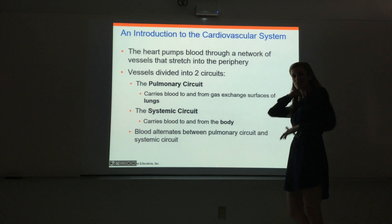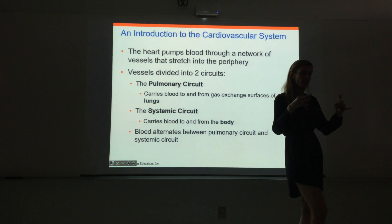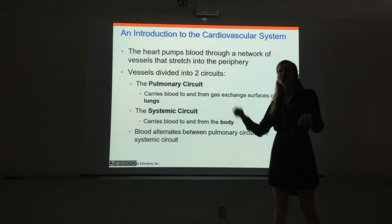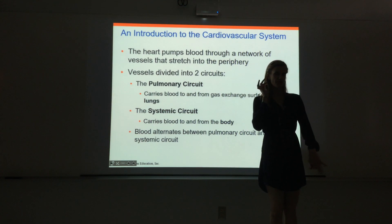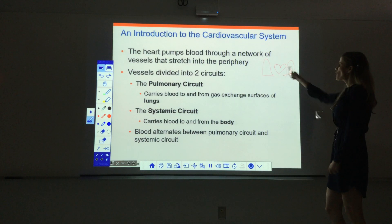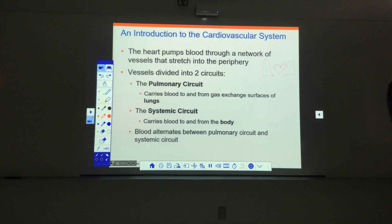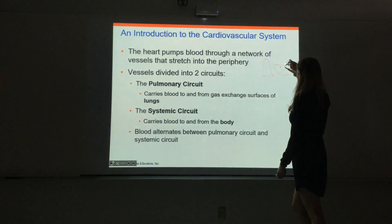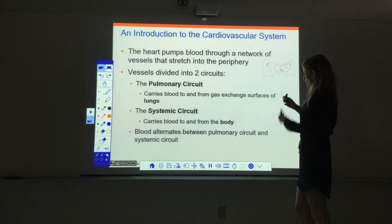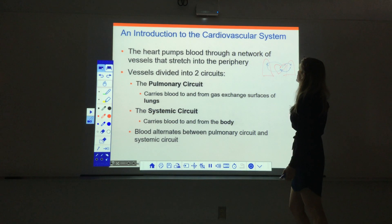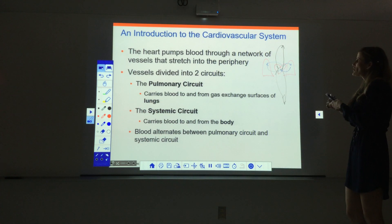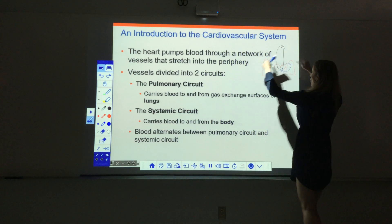The heart is a very busy muscle — it pumps over a hundred thousand times a day, constantly contracting to push blood through a series of vessels out into the periphery. When we look at blood vessels in the body, we divide them into two major groups: the pulmonary circuit and the systemic circuit. The pulmonary circuit goes to the lungs and back to the heart. The systemic circuit includes vessels that go out to the body and back to the heart. Blood alternates between the pulmonary circuit and the systemic circuit.